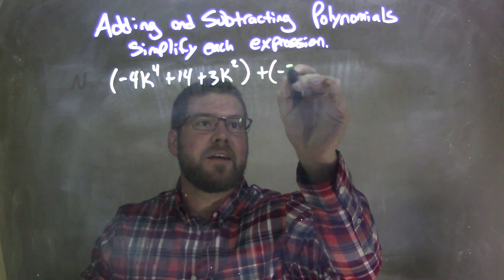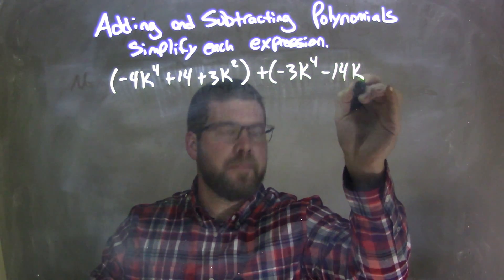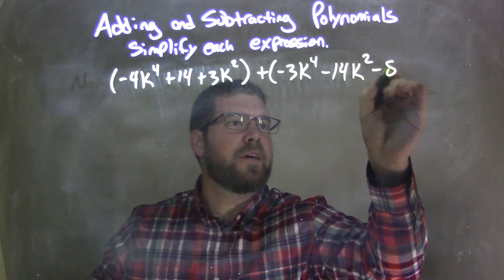plus, in parentheses, negative 3k to the 4th, minus 14k squared, minus 8.